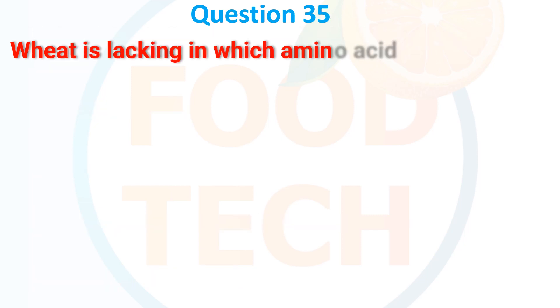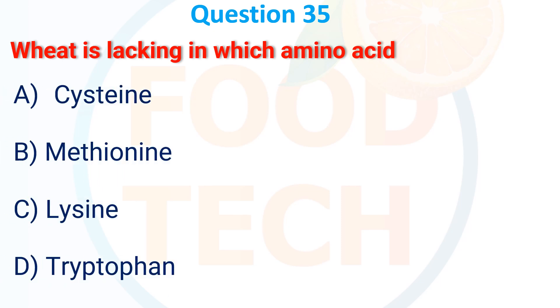Question 35. Which is lacking in which amino acid? A. Cystine. B. Methionine. C. Lysine. D. Tryptophan. The correct answer is C: lysine.